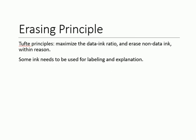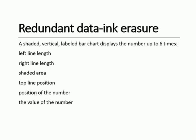The second visualization design principle is the Tufte erasing principle. It states that some ink is needed for labeling and explanation, but most ink in a visualization should not be wasted. The idea is: given a visualization, how can you remove redundant ink to maximize data? It tells you to work in steps — first remove the left axis line, then the axis line length, then the shaded area, then the top line position, then the number position, and finally the number values — up to six iterative improvements.